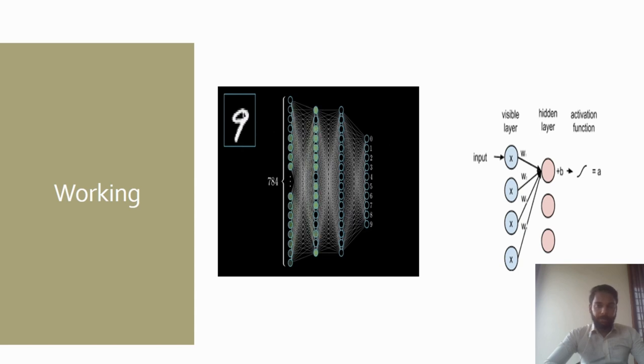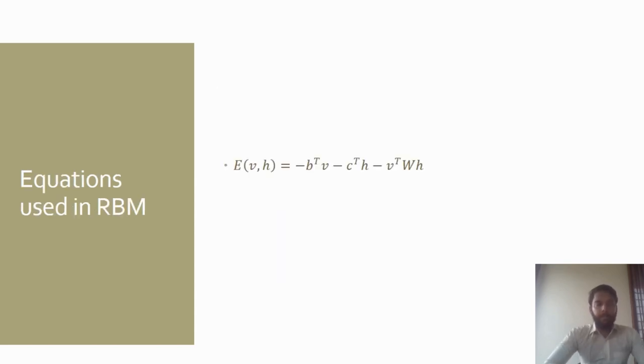RBM is an energy-based model. This is the energy equation which is a function of visible and hidden units. b and c are the bias vectors of visible and hidden layers, and w is the weight matrix. This is the probability equation and is represented as a function of energy.